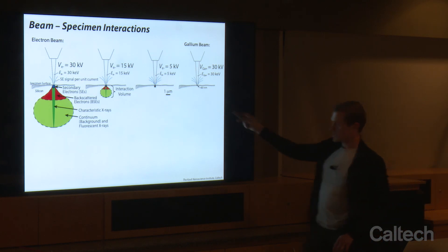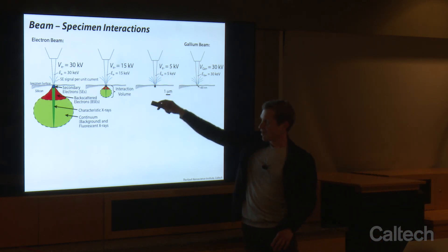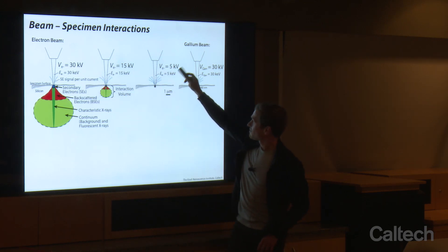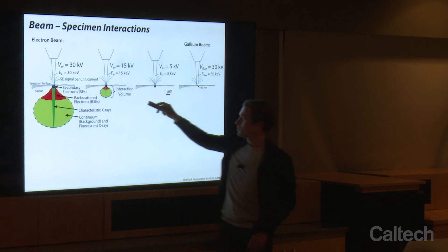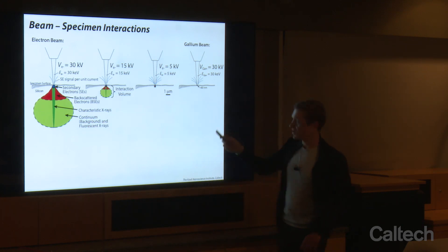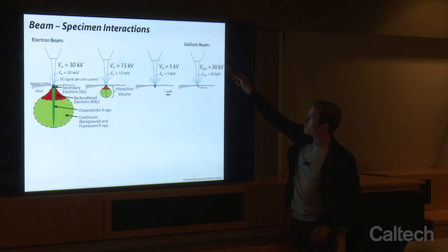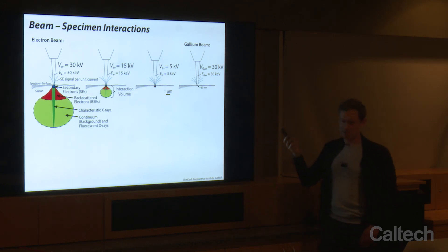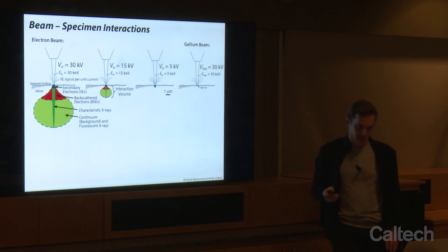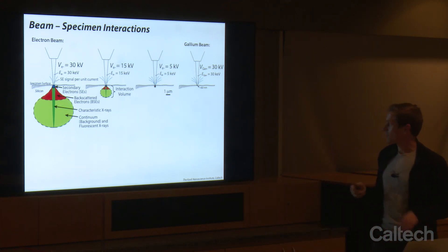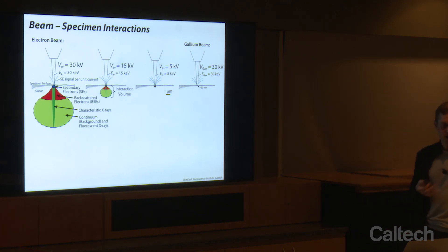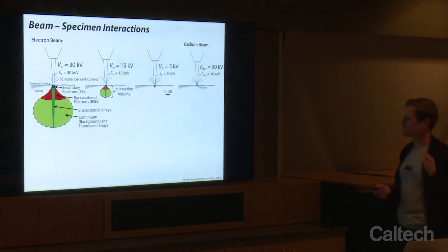In the SEM lecture, I spend time talking about interaction volume — this is in silicon at 30 kV, 15 kV, and 5 kV, giving about 8 microns of penetration into silicon at 30 kV. When we have 30 kV with gallium, the stopping power to these ions is great and you only penetrate about 60 nanometers into silicon. So the beam-specimen interactions are happening on very different orders of magnitude in terms of length scale.